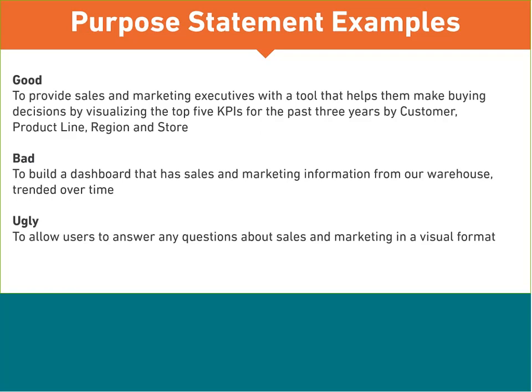The top one, which is good, hits all three things: it has the audience, it has the scope, and it describes some sort of action that the users will be able to take on the data or on the resulting information. Getting down to the worst one, it's very free-form, and in doing that you're allowing a lot of wiggle room. That wiggle room ends up making a lot of things look acceptable when you're building, and you want to have something that's a little bit more locked down.